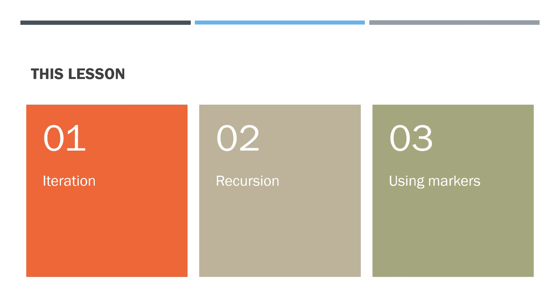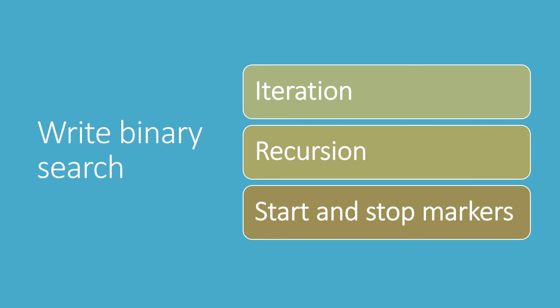In this lesson we've looked at three ways of writing the binary search: using iteration, using recursion, and using markers instead of slicing the list. I'll leave you with the task of writing all three versions. In the next lesson we'll start looking at how we can analyze and compare the efficiency of different algorithms. Bye for now.